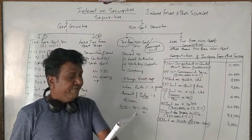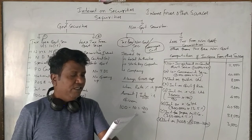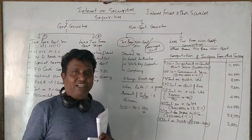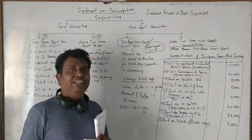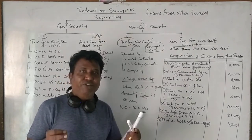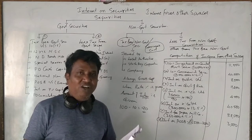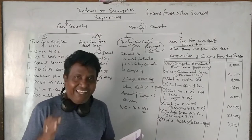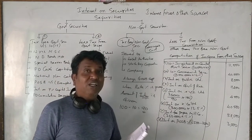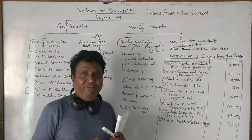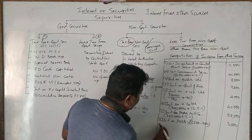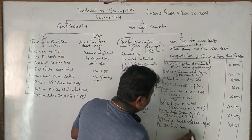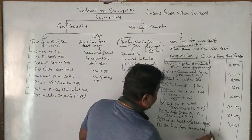Dividend received from Corona Limited — ₹32,000 gross. The word 'limited' means it is an Indian company. Any dividends received from an Indian domestic company are completely exempted, as we have already discussed. Therefore, dividend from Corona Limited is exempted.